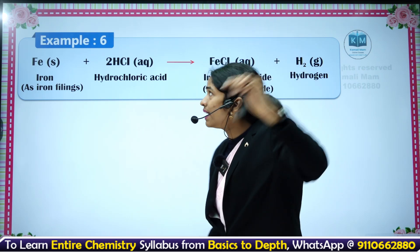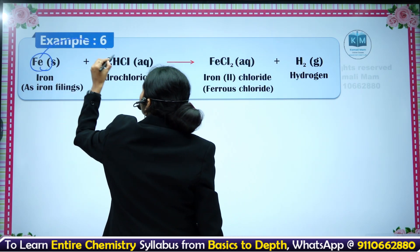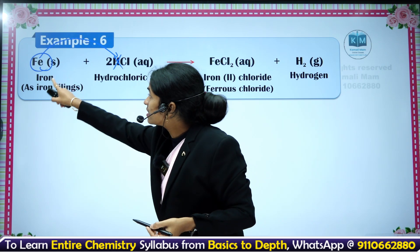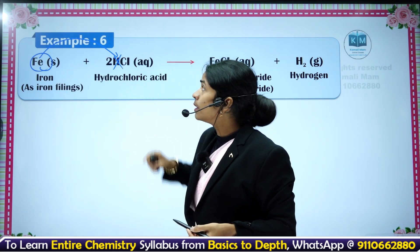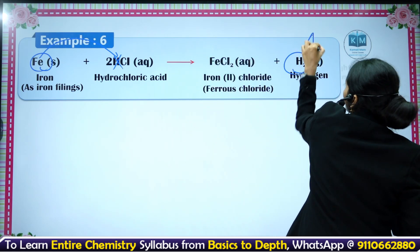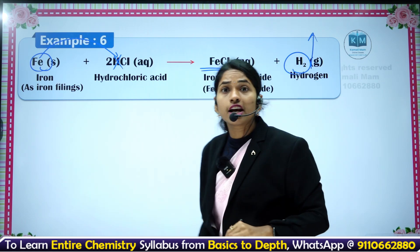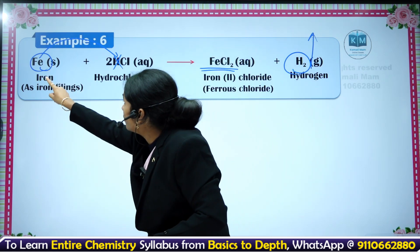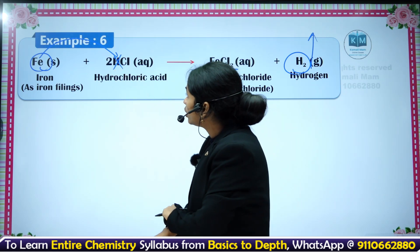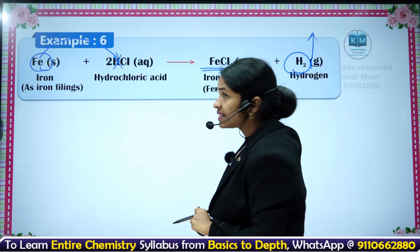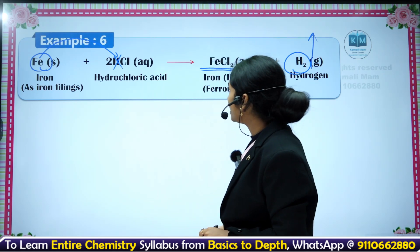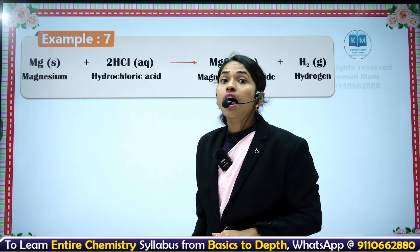One metal goes and displaces another element from its compound. Here, iron is more reactive than hydrogen. That is the reason when you put iron filings in hydrochloric acid, hydrogen gas comes out and FeCl2 — ferrous chloride — is formed. Iron displaces the two hydrogens and it forms FeCl2. Hydrogen gas comes out. This is one of the displacement reactions, because iron is more reactive than hydrogen.